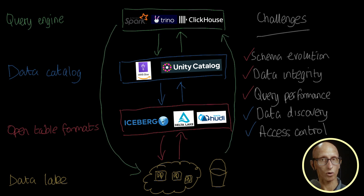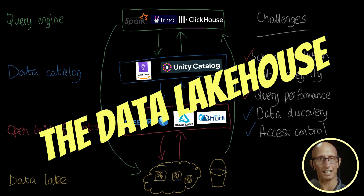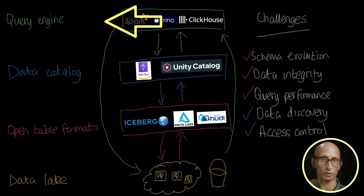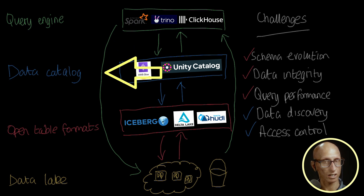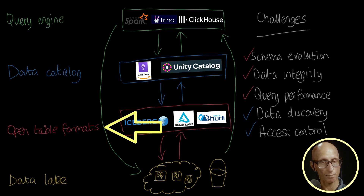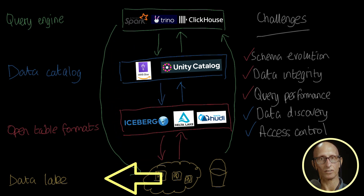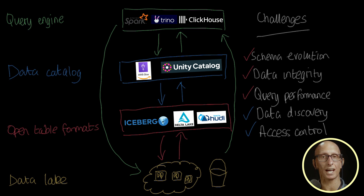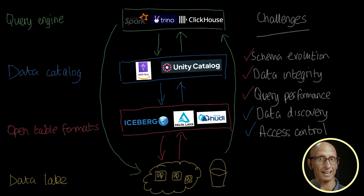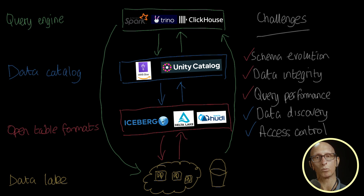These four layers make up the data lakehouse: the query engine, the data catalog, the table formats, and then finally the data lake for storage. You'll probably have noticed that these layers are the same as what we have in a database — the query engine is the same, the data catalog is a database which contains tables, and then finally we have storage of the underlying data.